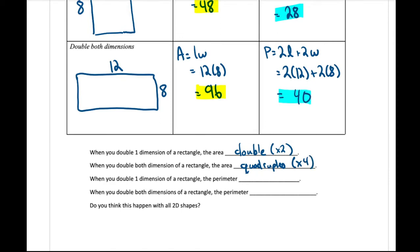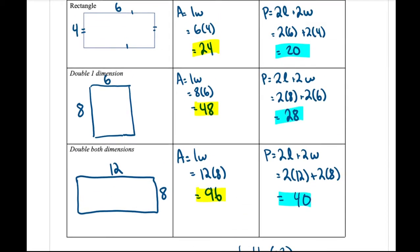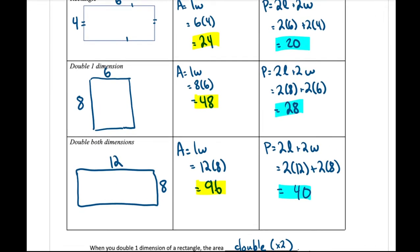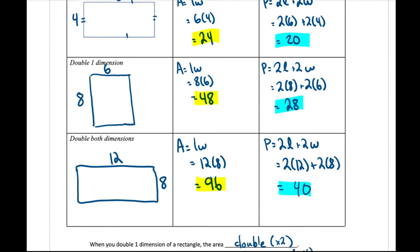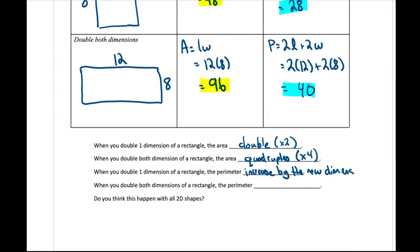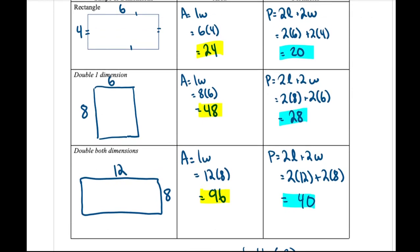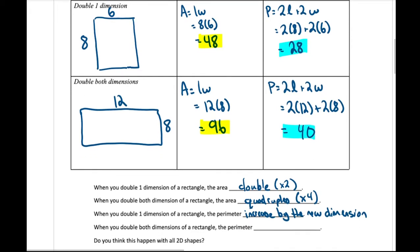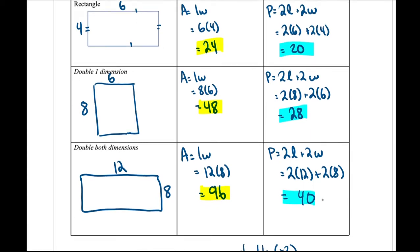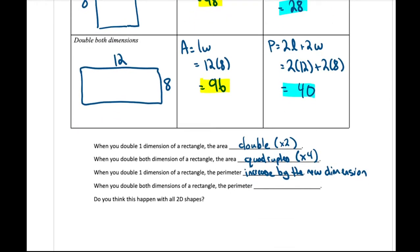If you double one dimension of the rectangle, what happens to the perimeter? We go from 20 to 28. We can see that by doubling one dimension to 8, we're adding that new dimension to our perimeter — so the perimeter increases by the new dimension value, which was 8. When we double both dimensions, we went from 20 to 40, so the perimeter doubles.